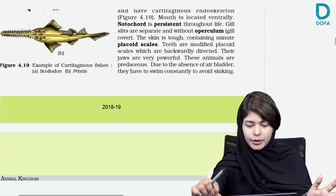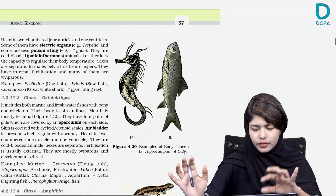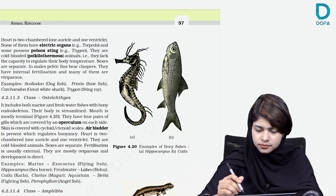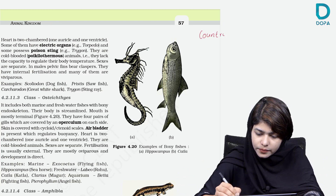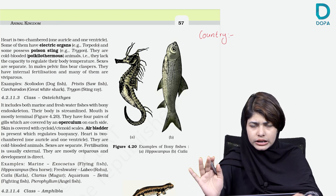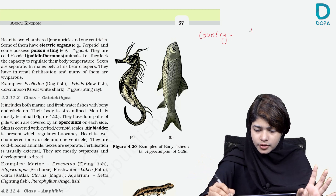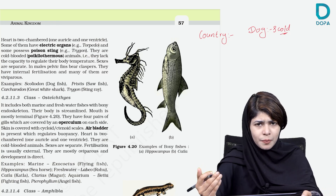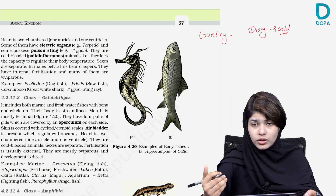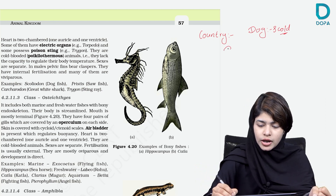Now we are going to ask about Chondrichthyes. This code is very special. Here is Chondrichthyes — one is Chondrichthyes, one is dogfish. The dogfish is a dog. Once you walk away, the dog is a dog. You have dogfish.